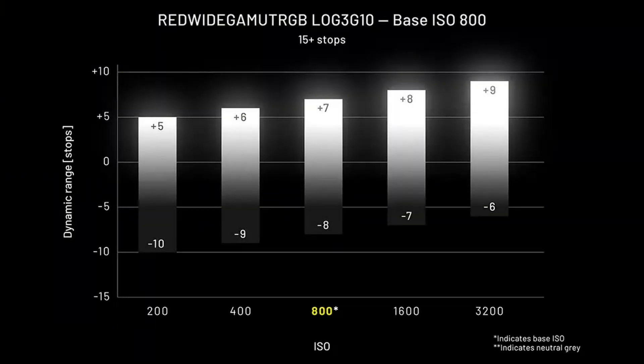This chart on the Nikon website shows you how you can use different ISO values to shift your dynamic range towards shadows or the highlights. We're going to test that.